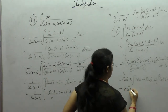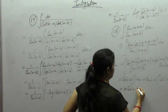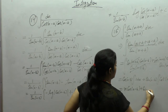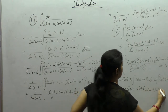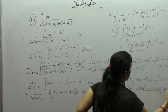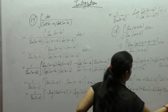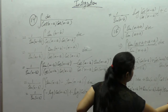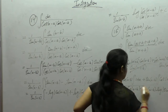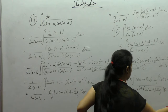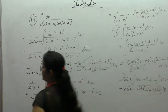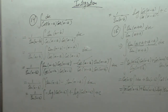So the result is: x·cos(a-b) + sin(a-b)·log|sin(x+b)| + C.